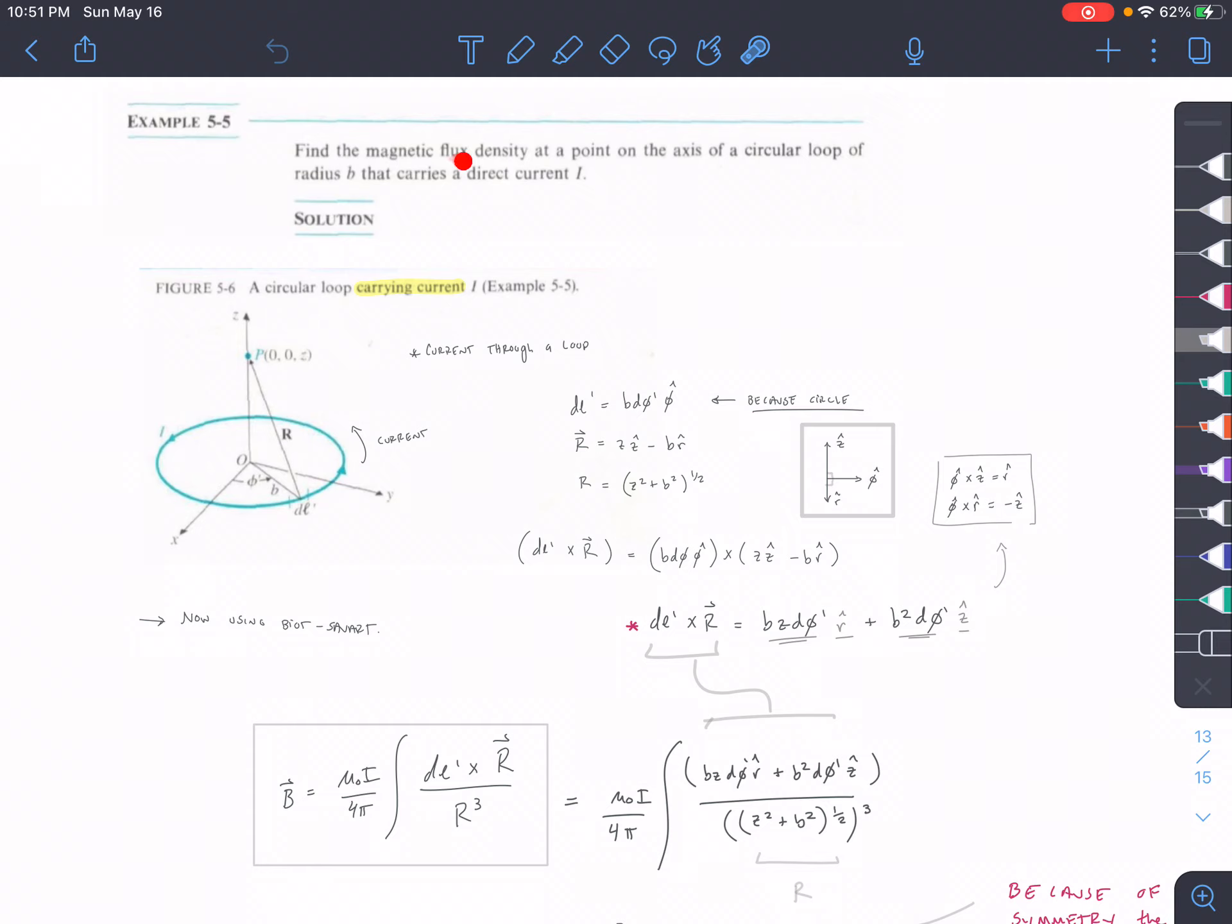Okay, so we're looking for the magnetic flux density at a point on the axis of a circular loop with a radius of B that carries a current I. So we have a current I through the loop, and we're trying to find the B field here at a point.